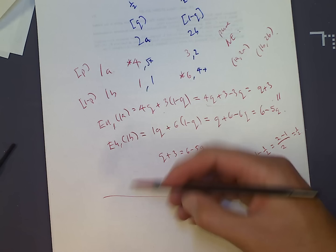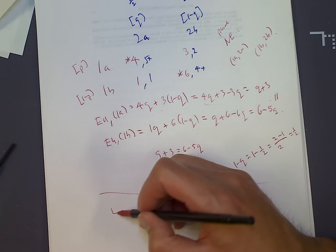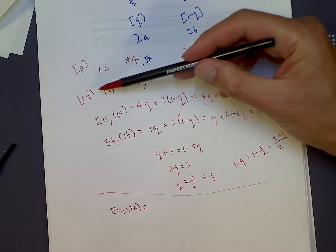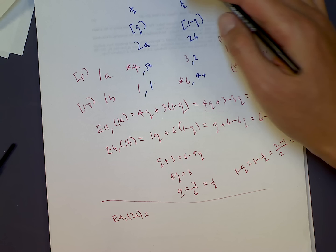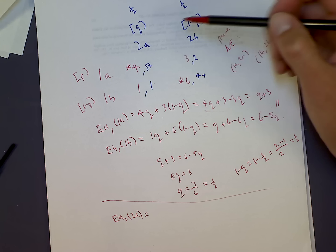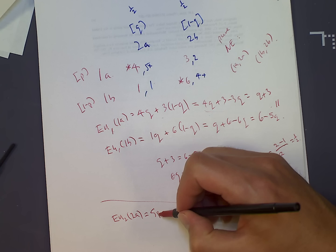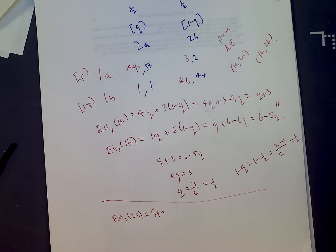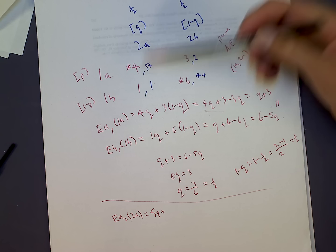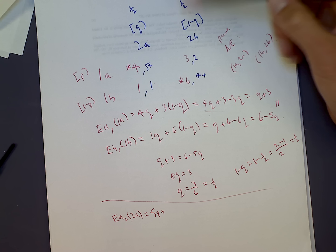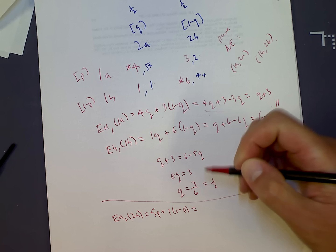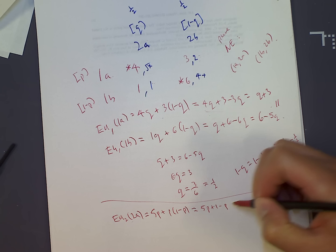Now let's solve for P. To find P, I look at player 2's expected utility from playing A. Player 2 gets 5 with probability P and 1 with probability 1 minus P — so expected utility from A is 5P plus 1 times 1 minus P, which equals 4P plus 1. Player 2's expected utility from playing B: if 2 plays B, it's 2 with probability P and 4 with probability 1 minus P, which gives 2P plus 4 times 1 minus P, and this becomes 4 minus 2P.